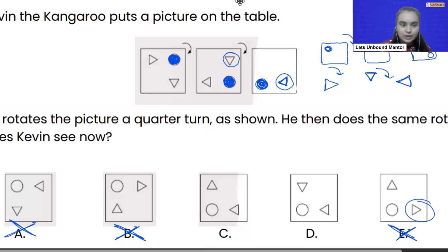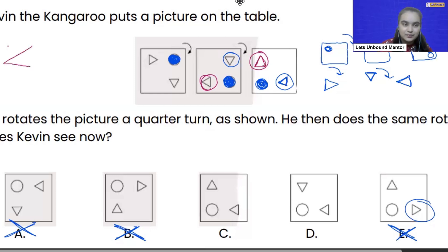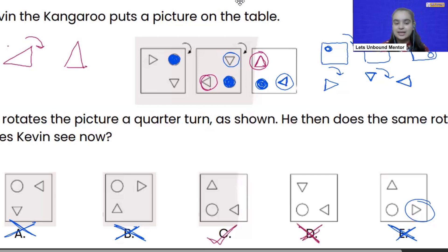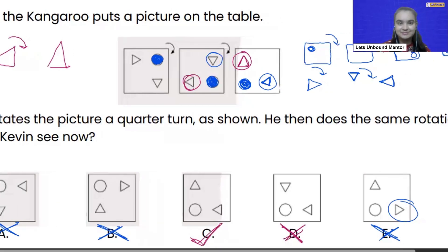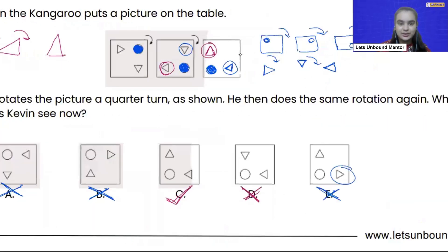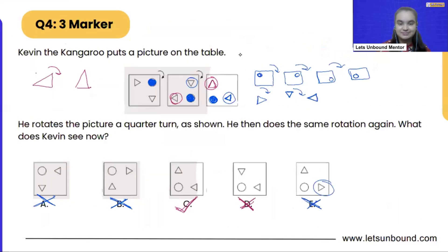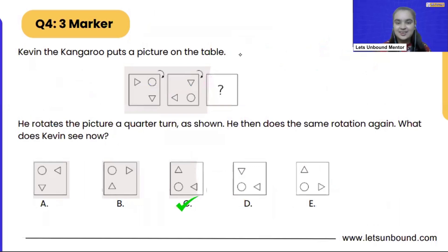And now if we look at the second triangle — the position will go one step up, so it will land here. It will rotate 90 degrees and it is going to look like this. From here, we can eliminate option number D. And our correct answer is C. I hope it makes sense. That is how we are going to solve this problem. Our correct answer is option C.